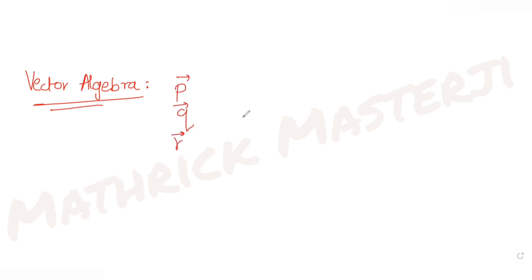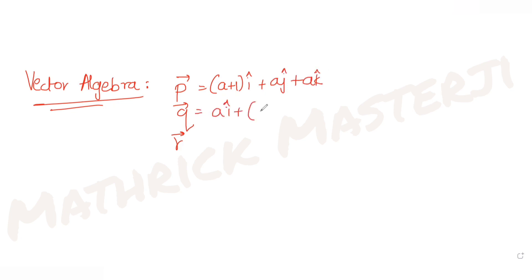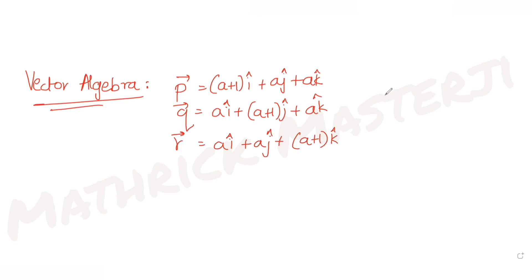Vector p is given as (a+1)i + aj + ak. For q it is given as ai + (a+1)j + ak. The third vector r is ai + aj + (a+1)k. These are the three vectors p, q, r, where a belongs to the real numbers.